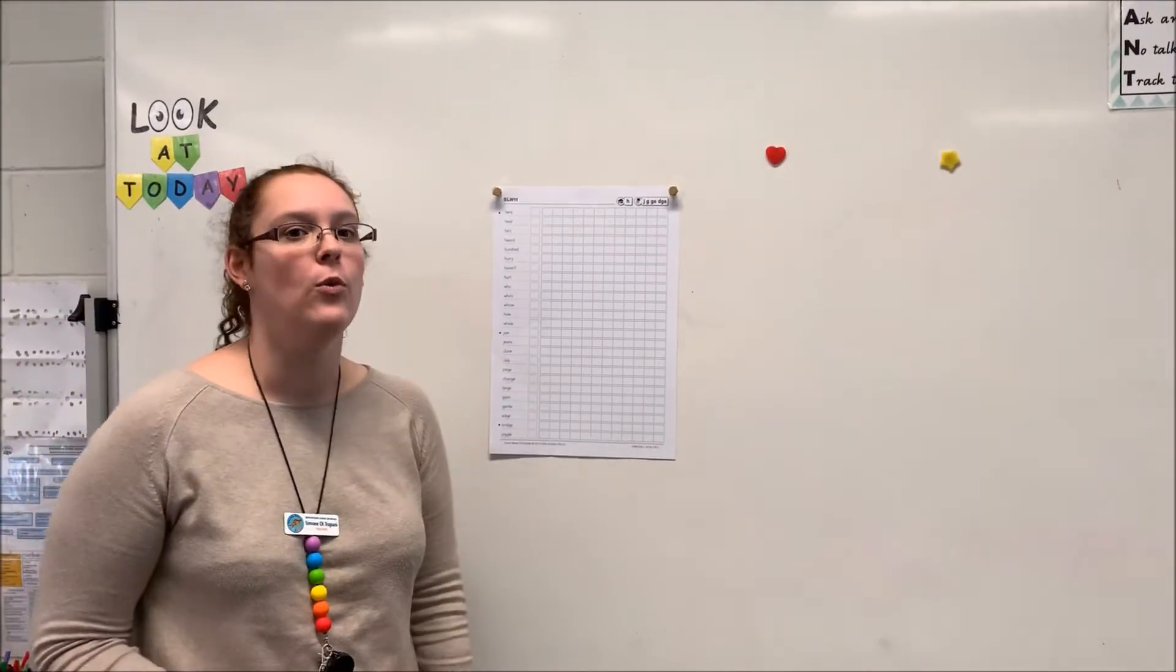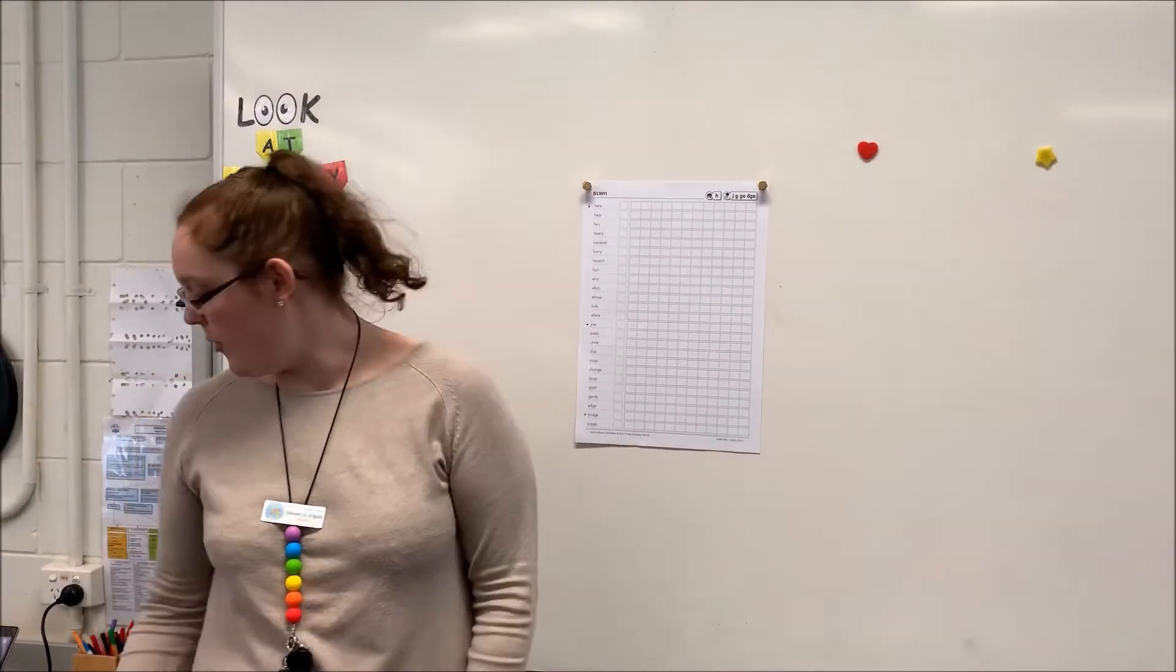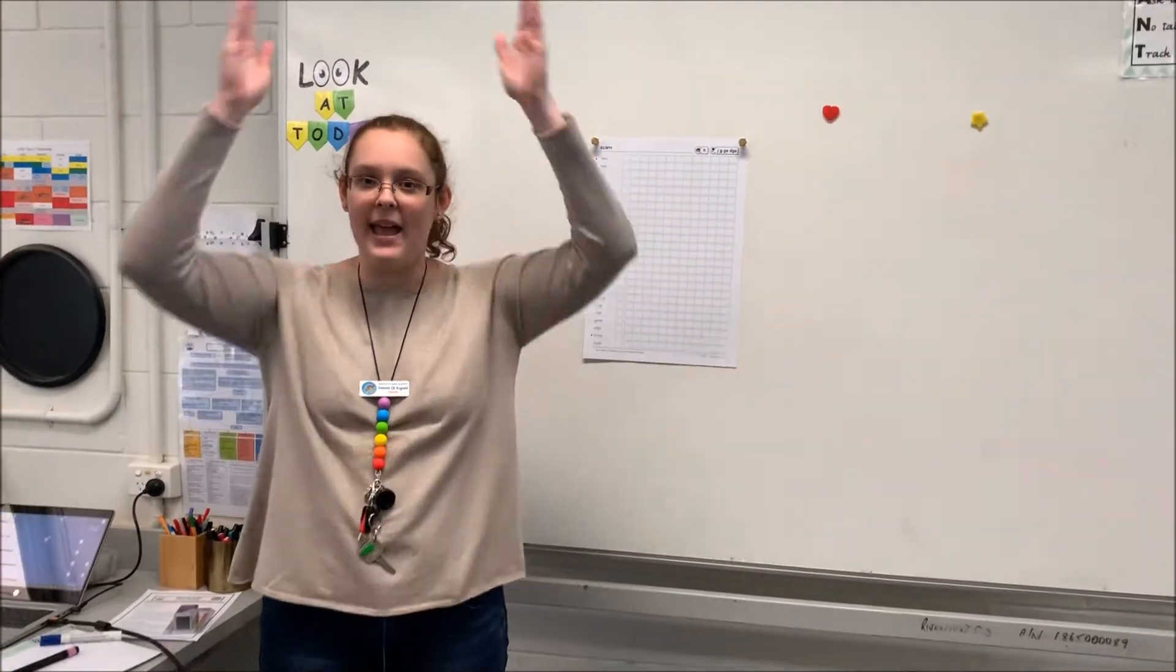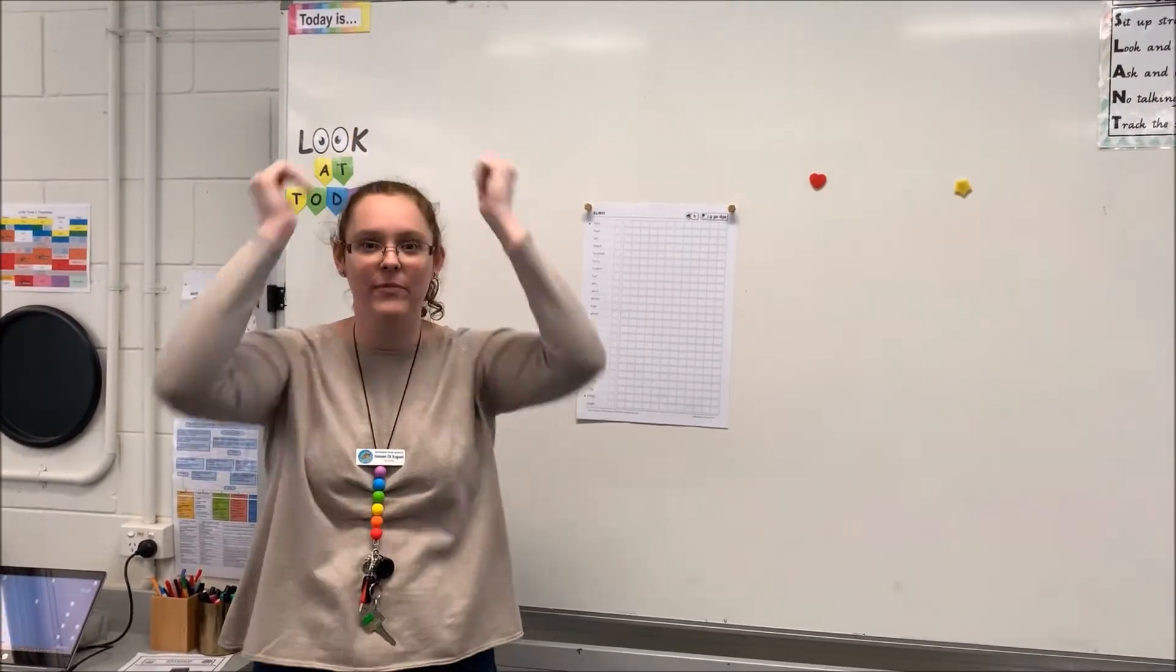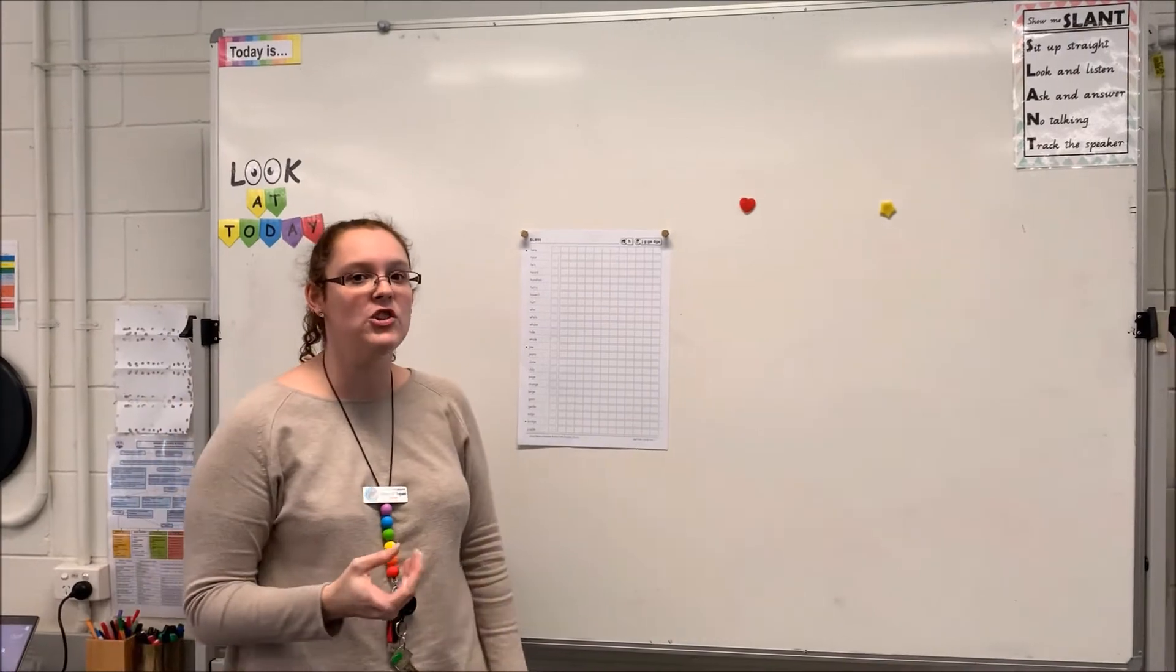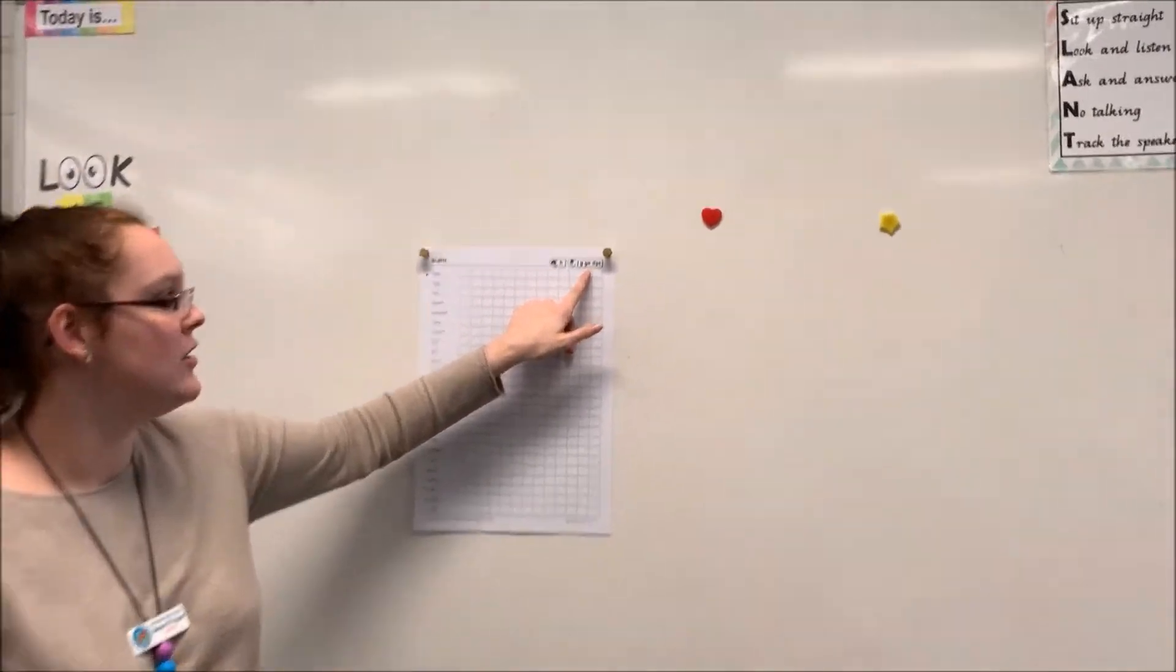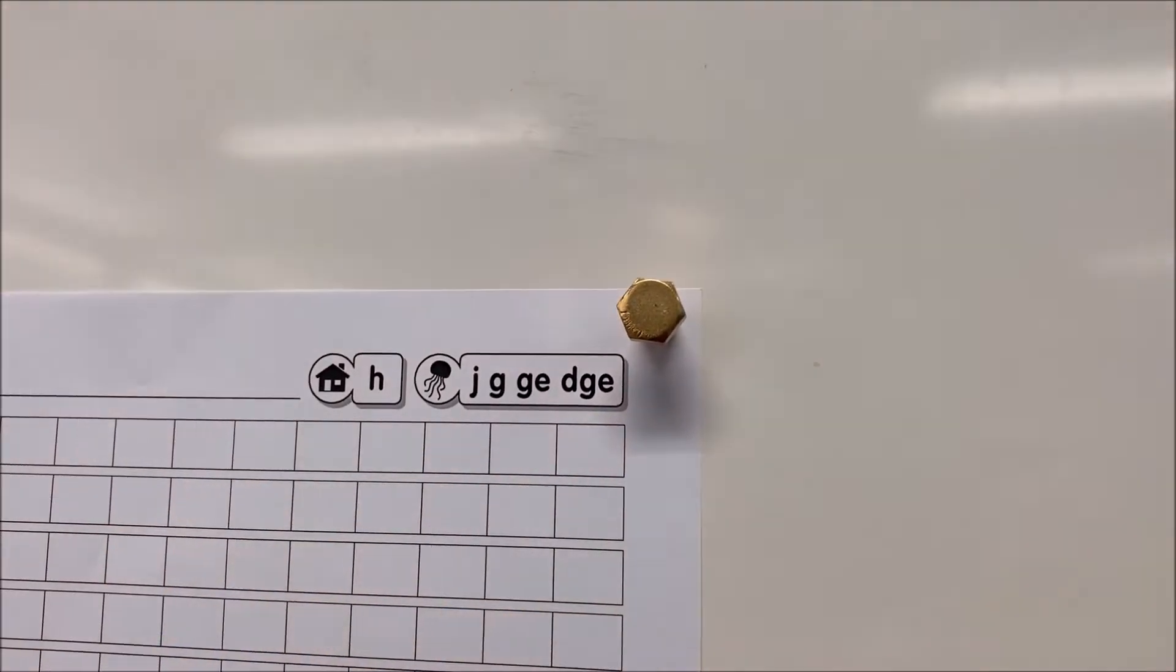Our first sound was H, which is shown by H. We had happy house. Our second sound of the week was J, and that can be shown in different ways: J, G, G-E, and D-G-E.